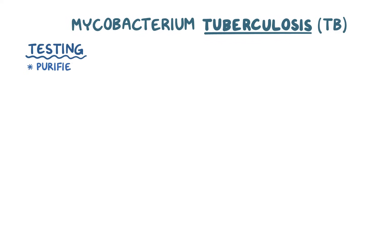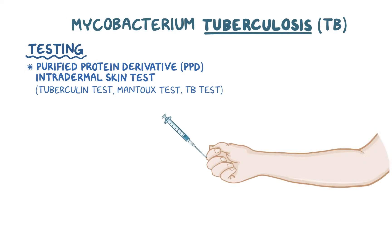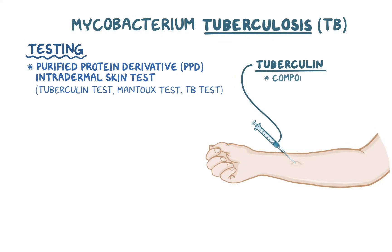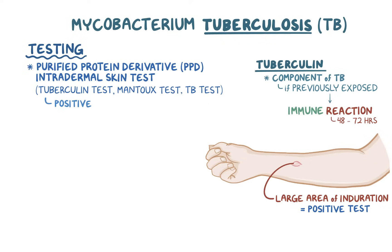Testing for TB often starts with a purified protein derivative, or PPD intradermal skin test, sometimes known as a tuberculin skin test, Mantoux test, or simply TB test. Tuberculin is injected between layers of the dermis. If a person has previously been exposed to TB, the immune system reacts and produces a small, localized reaction within 48 to 72 hours. If the reaction creates a large enough area of induration, rather than just redness, it's considered to be a positive test. A positive tuberculin test simply means the patient has been exposed at some point — it does not differentiate between active and latent disease.